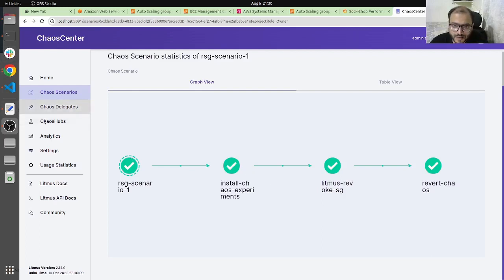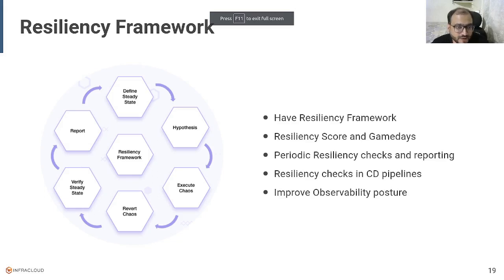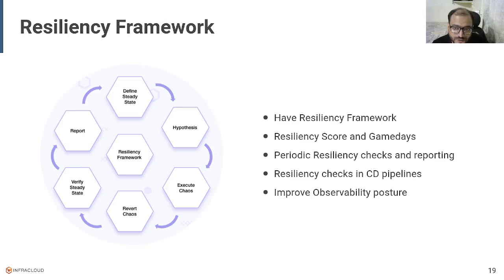That's all for this talk. We have seen what is chaos, what is resiliency, and how to increase reliability of your system using chaos engineering and resiliency testing. We saw Litmus Chaos and why it was useful for our use case: it is open source, flexible, has a centralized approach for executing chaos into multiple accounts, and mainly it has the integration for AWS SSM documents through which we executed chaos inside Kubernetes and outside of Kubernetes in AWS. Thank you.